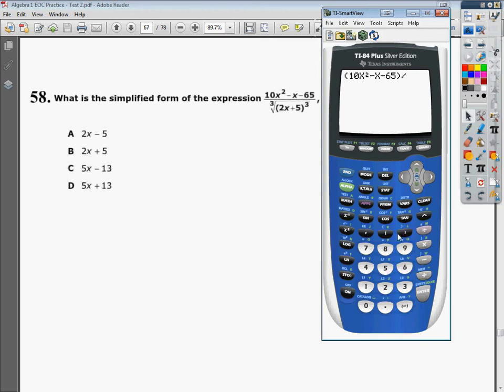Then I'm going to divide in parentheses again. I need to go into the catalog to find cube root. So hit second, go to catalog, and it takes a few seconds to get up to it. You think you're there, and then you're not. There it is, right there.